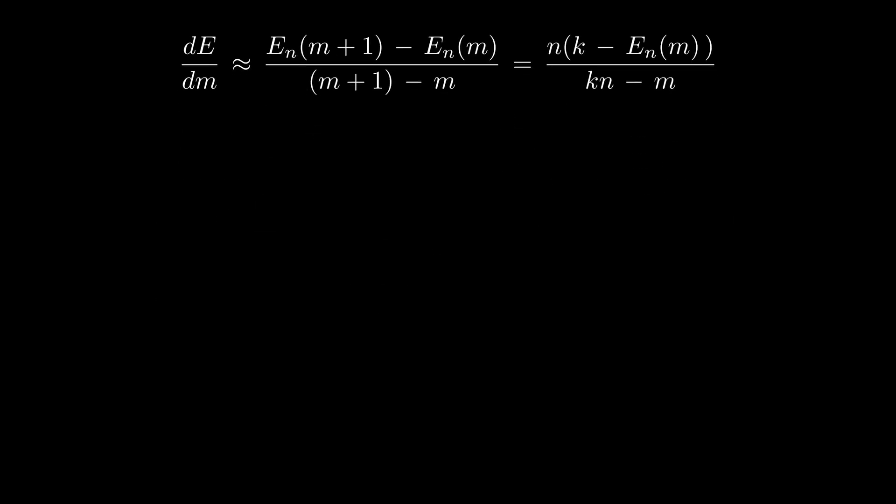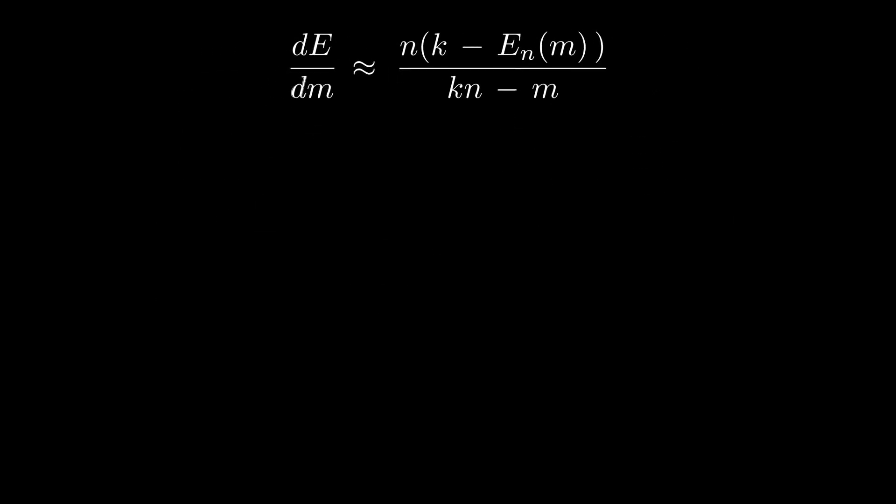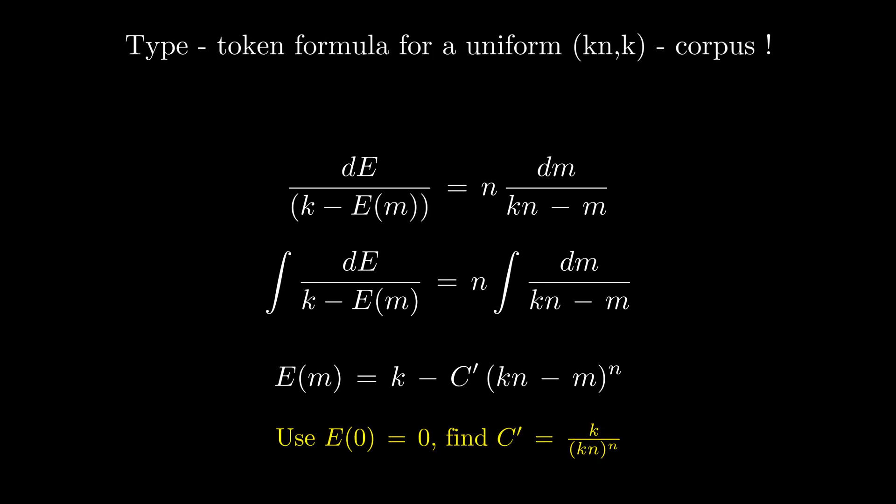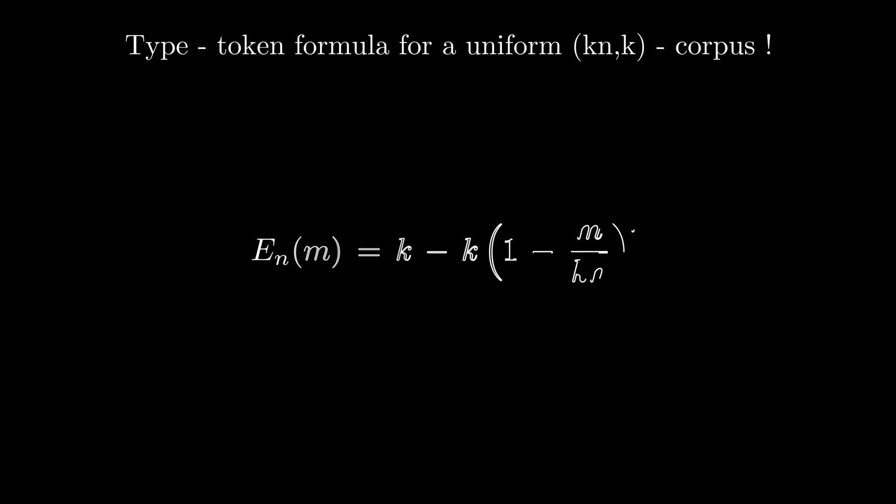Forgetting about precision for a moment, we can solve this differential equation by splitting the variables, integrating, and simplifying. There is an obvious boundary condition we can use to get the constant. Finally, we derive an explicit formula for a corpus with uniform type token distribution.